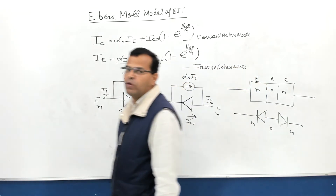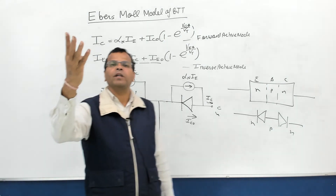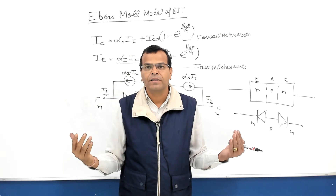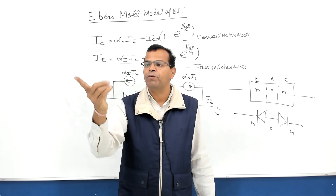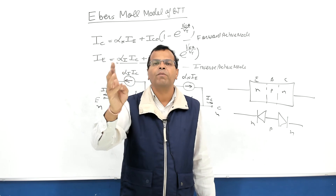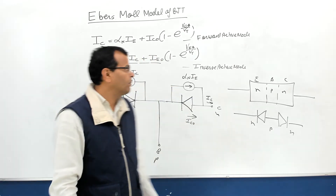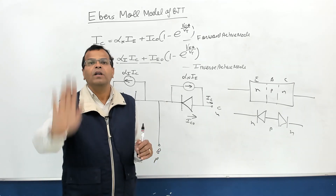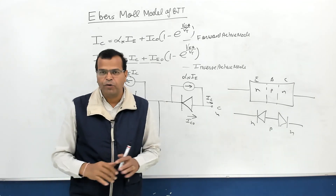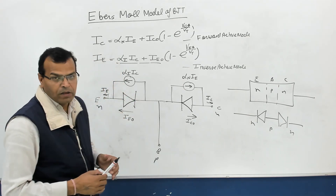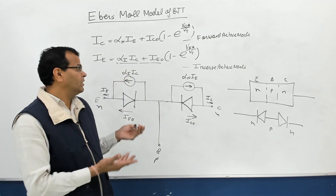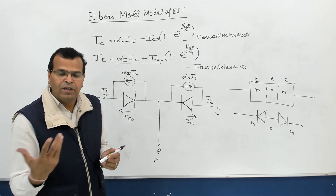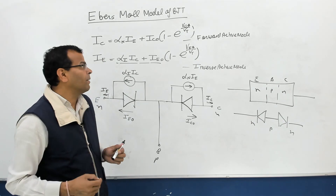So when you connect two diodes back to back, they will not behave like a BJT. The condition for amplifier operation is that the width of the base region should be less than the diffusion length, which is not satisfied with two diodes connected back to back. This is just a mathematical analysis — I am including dependent sources for the model. The Ebers-Moll model makes use of forward active mode and inverse active mode for drawing the circuit, but it is applicable for all modes of operation: cutoff, saturation, forward active, and inverse active mode.